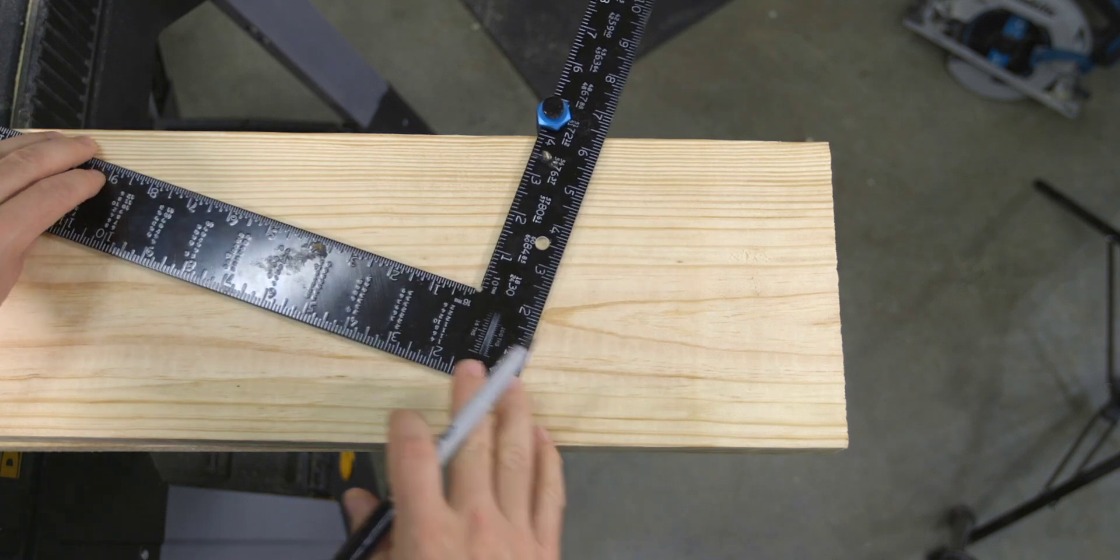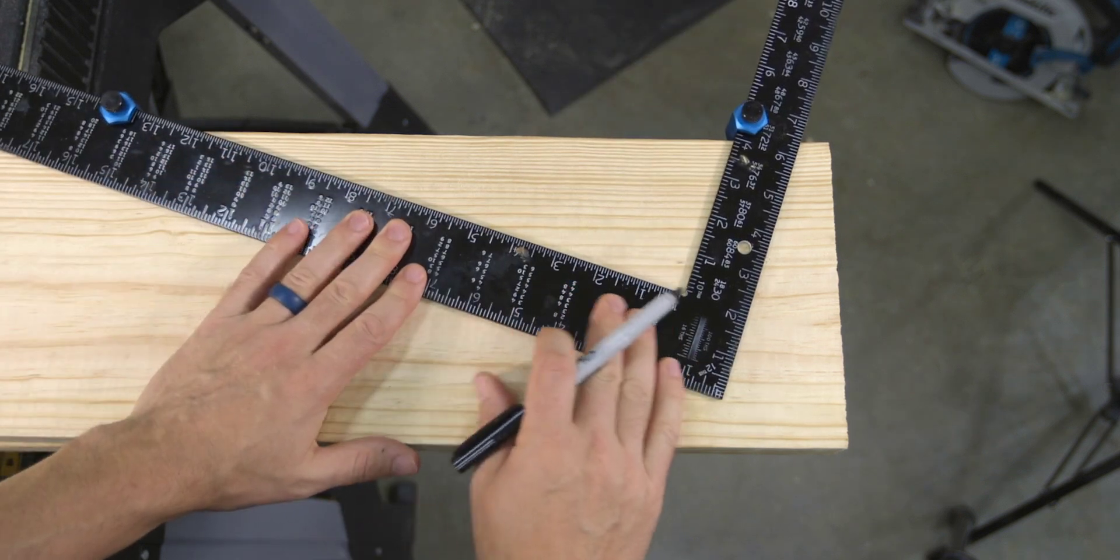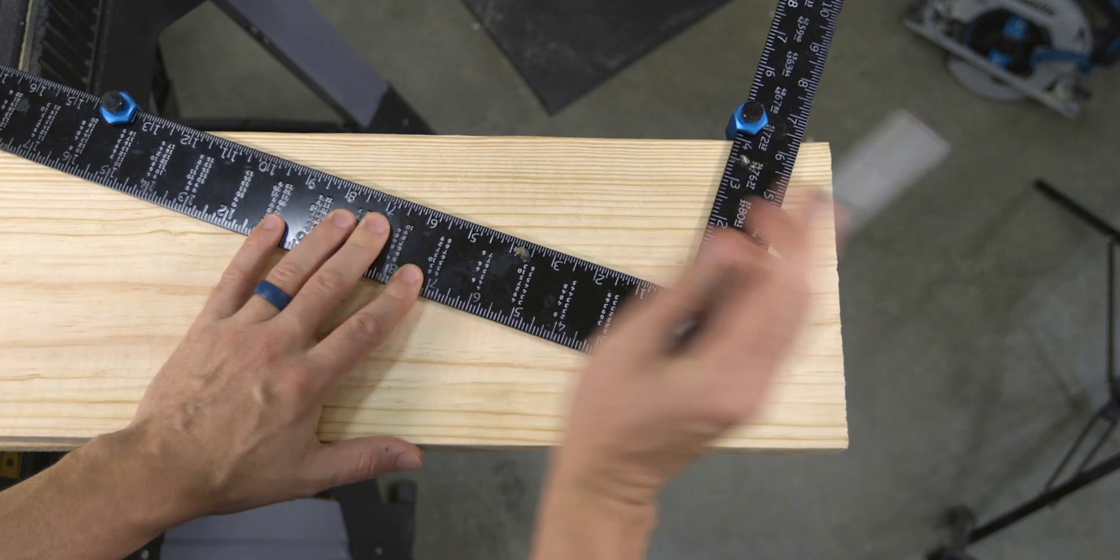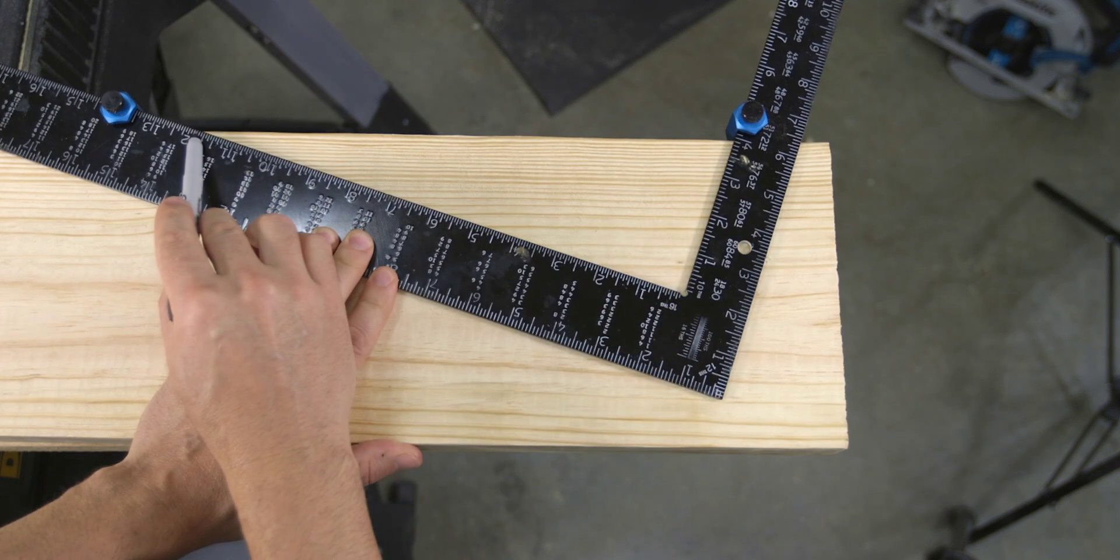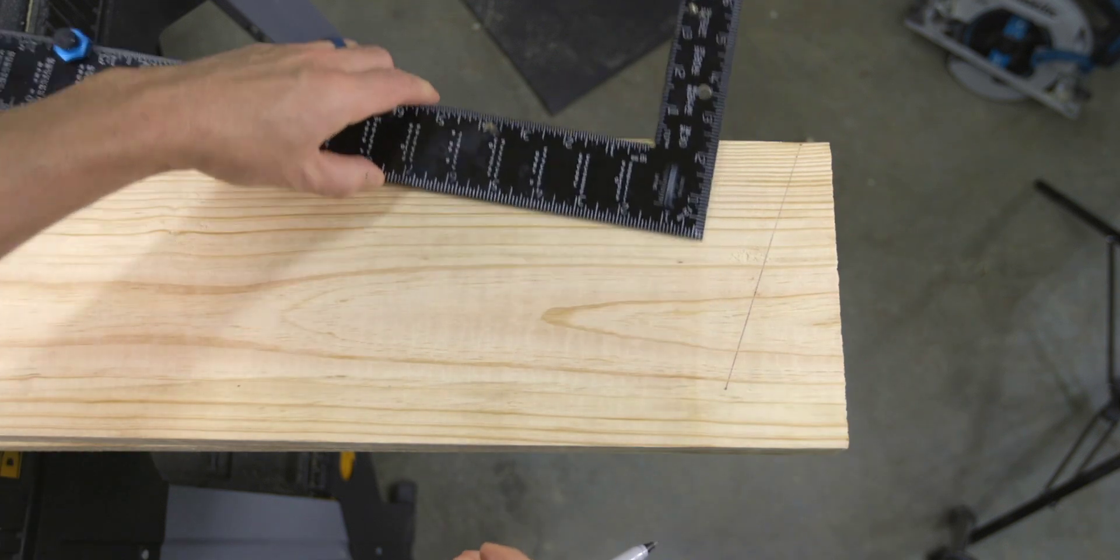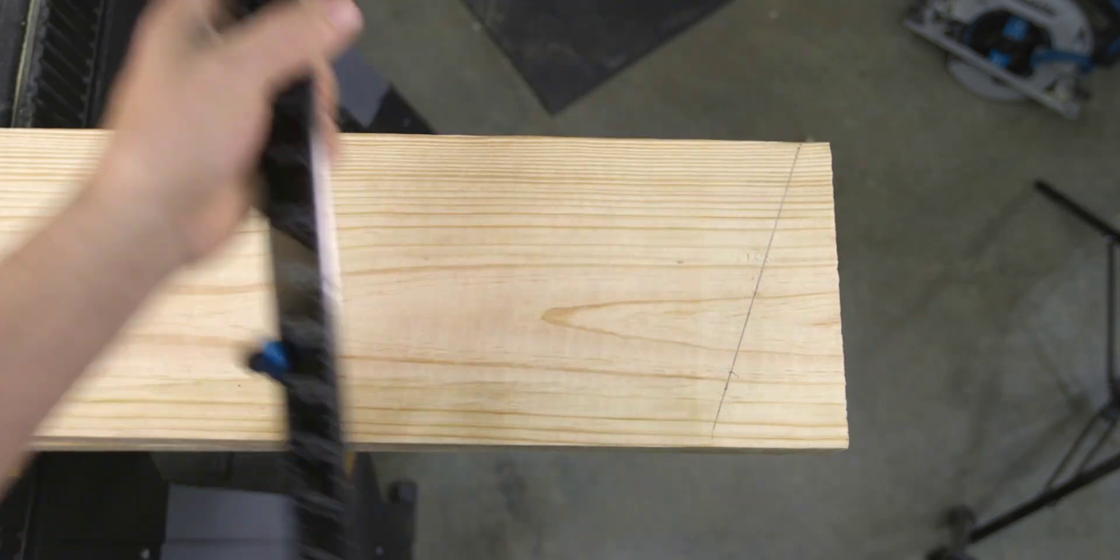Jumping back in, using the numbers we just figured out, lay out a framing square with the 4 on the tongue side, which is our unit rise, and the 12 on the blade, which is our unit run. Draw a ridge plumb cut line and cut it out using a circular saw.